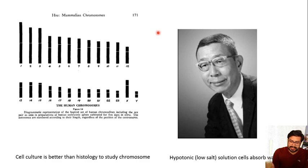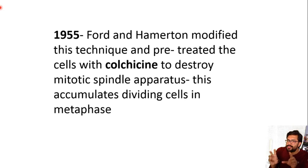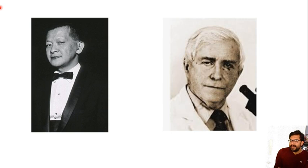So Sue contributed two great techniques: cell culture for better morphology, and hypotonic solution treatment to allow chromosomes to separate. Then in 1955, Ford and Hammerton modified Sue's technique, used the cell culture method, and introduced colchicine. They found that pre-treating with colchicine destroys the mitotic spindle apparatus, arresting all dividing cells in metaphase — making counting easier and morphology better.